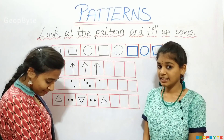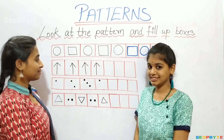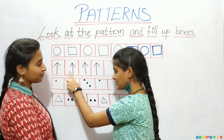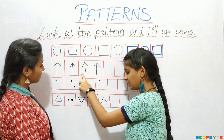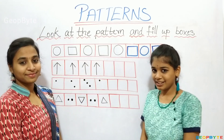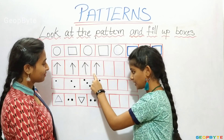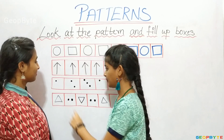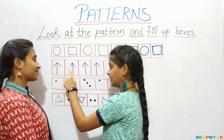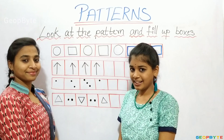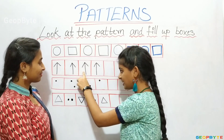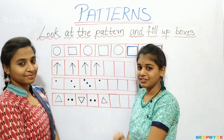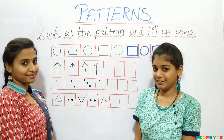See here. There are a few arrows. Upside arrow, upside arrow, upside arrow, upside arrow. After upside arrow, what comes? Let us see. After upside arrow, there is an upside arrow again. After upside arrow, there is an upside arrow. Let us draw an upside arrow.